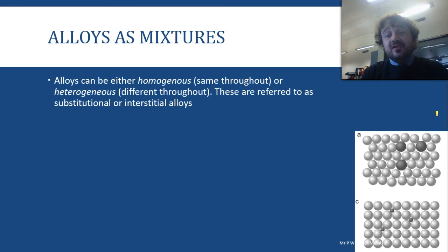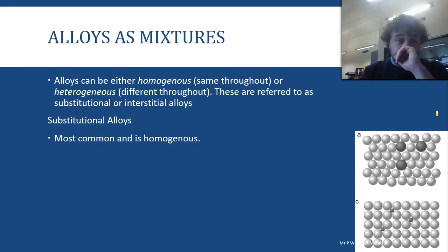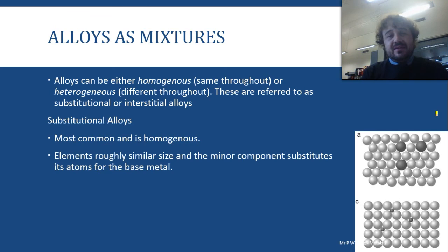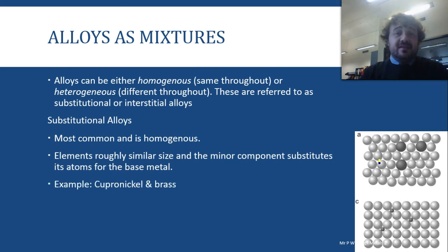Alloys can be homogeneous — the same throughout — or heterogeneous — different throughout. These correspond to what we call substitutional or interstitial alloys. A substitutional alloy is the homogeneous one, and it's the most common by a long shot. This happens when the atoms of the elements are of roughly similar size, and in the lattice the minor component just substitutes in — it takes the place of one of the major component's atoms. Copper-Nickel and Brass are good examples of this.